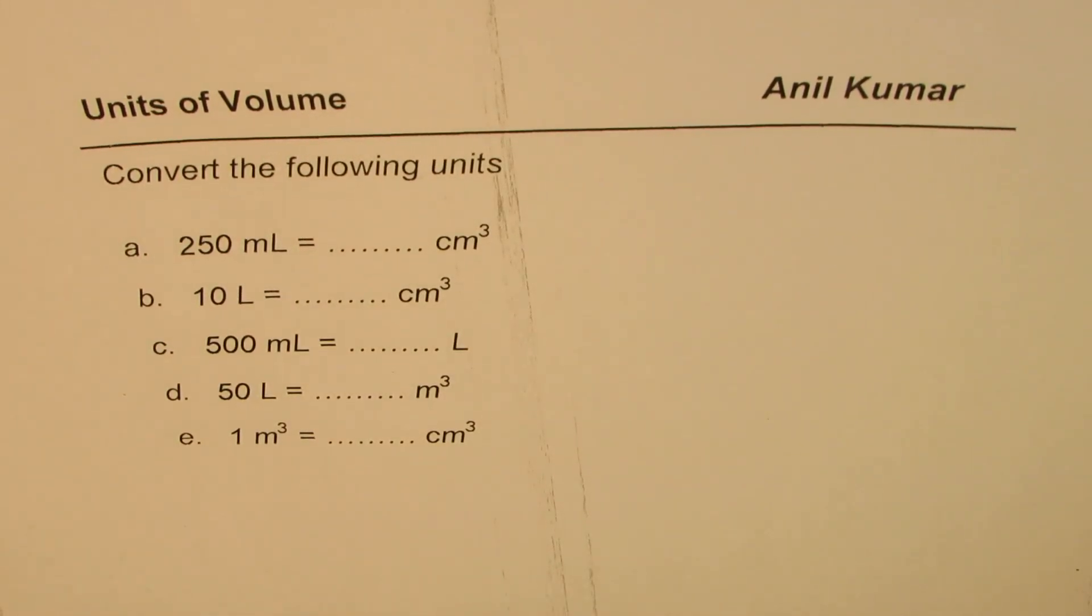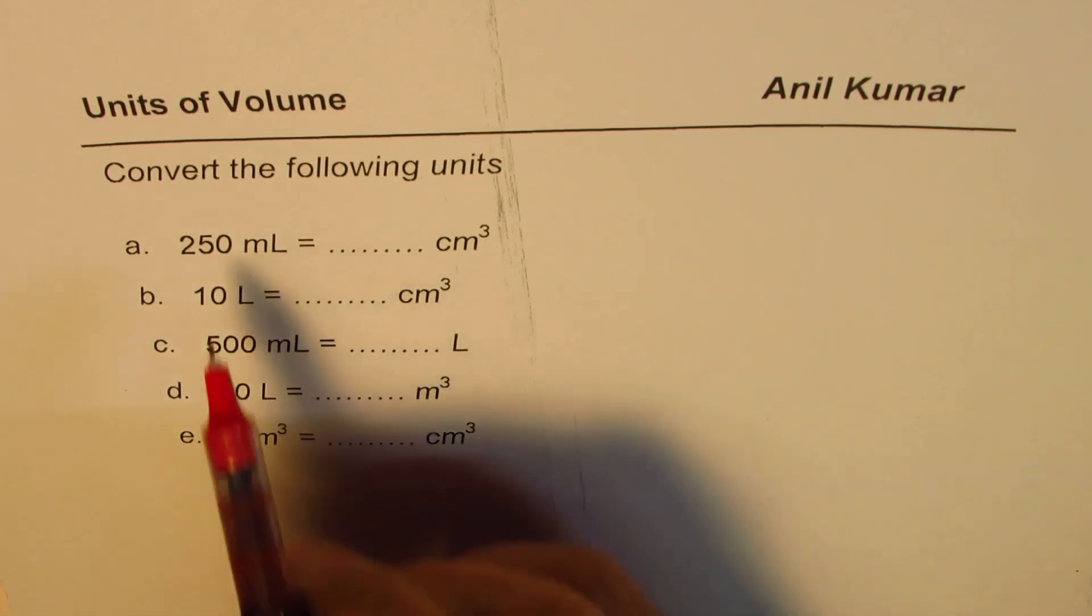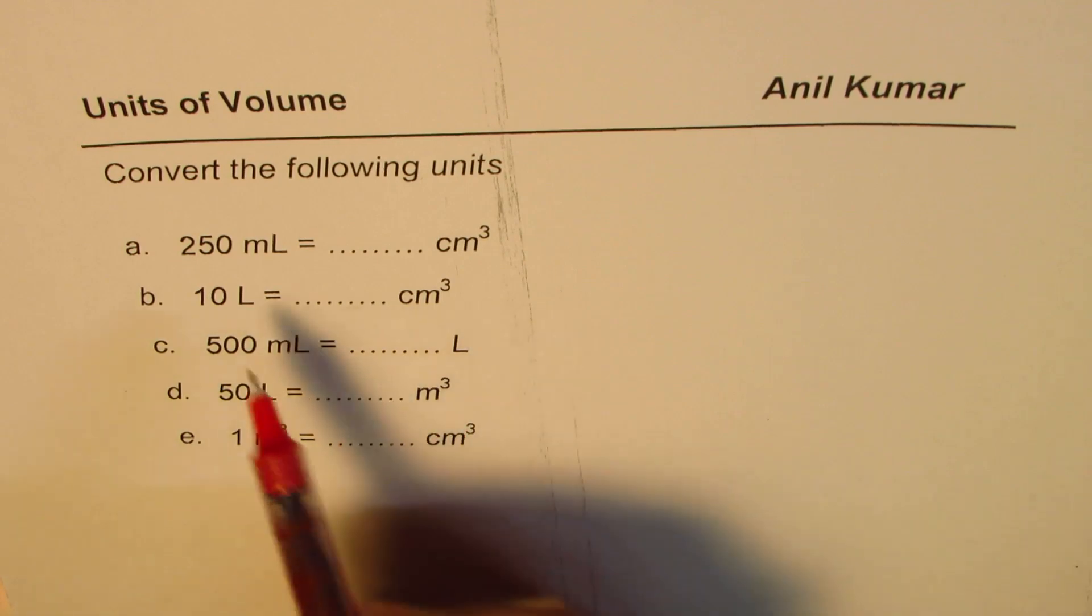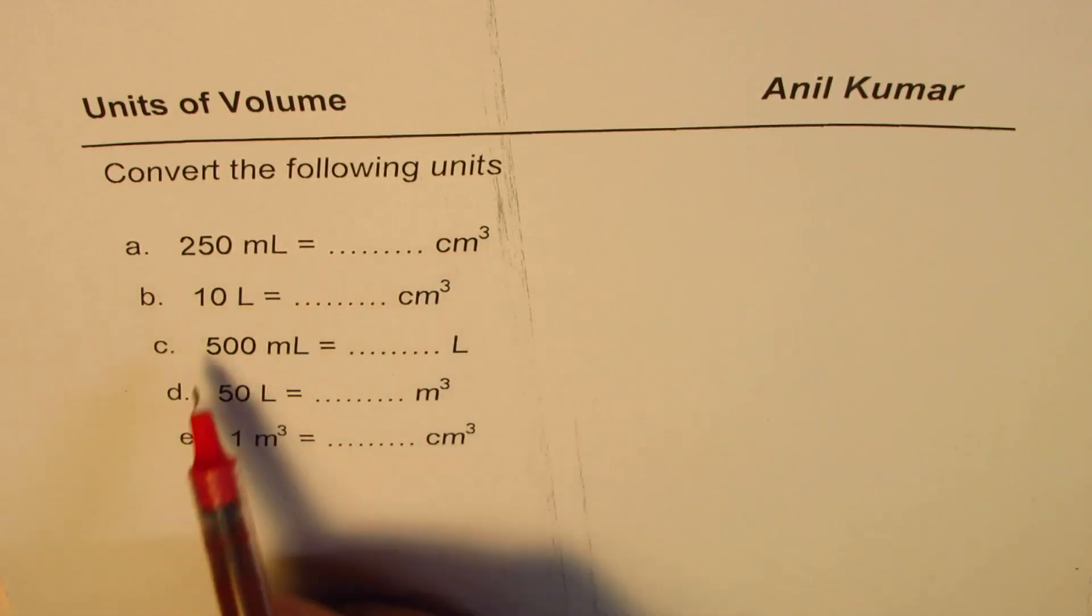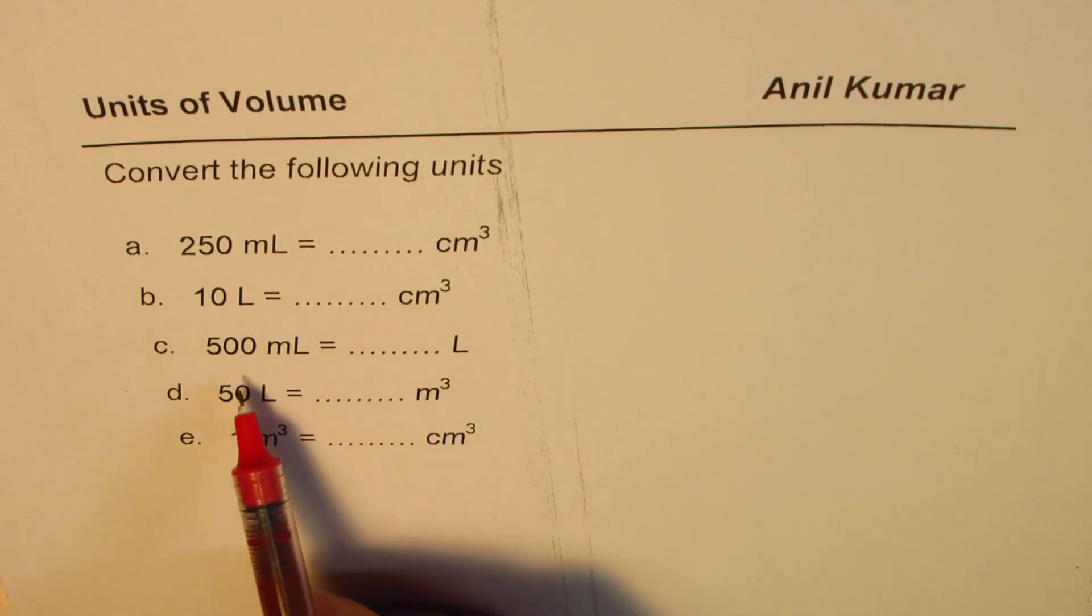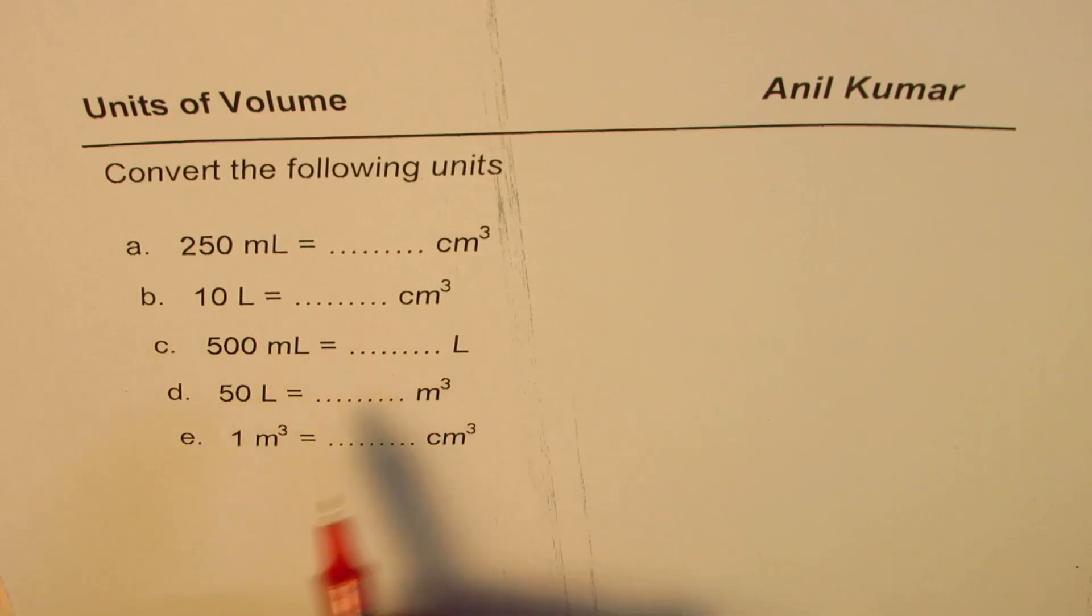I am Anil Kumar and in this video we practice how to convert units of volume. The question here is convert the following units: 250 milliliters to centimeter cubed, 10 liters to centimeter cubed, 500 milliliters to liters, 50 liters to meter cubed, and 1 meter cubed to centimeter cubed.